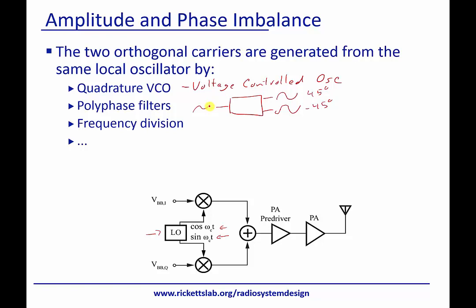They can also be done through frequency division and a number of other means. The reason we describe how it's done is just for you to realize that however we do it, there's going to be some non-ideality that can create two problems. One is that the amplitude of the two signals is not the same, and also the phase isn't exactly 90 degrees. And this actually happens quite often.